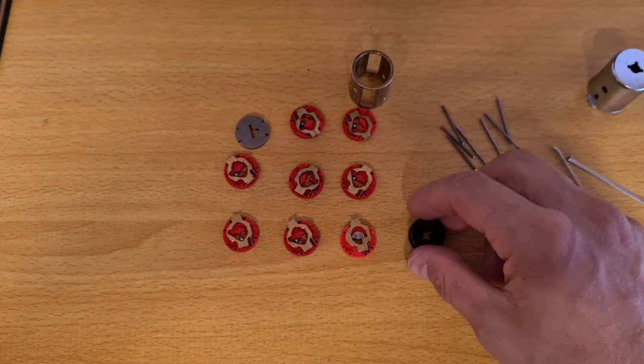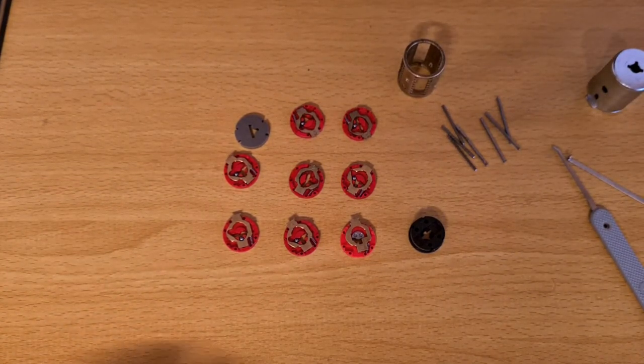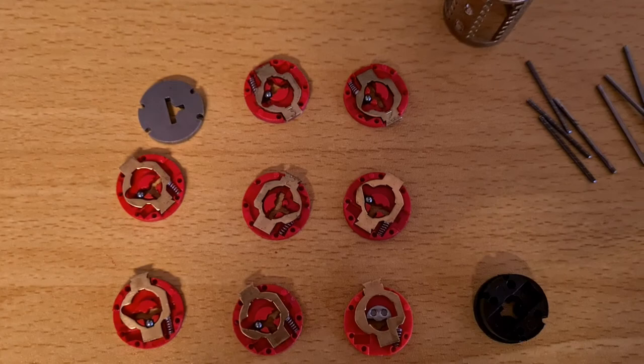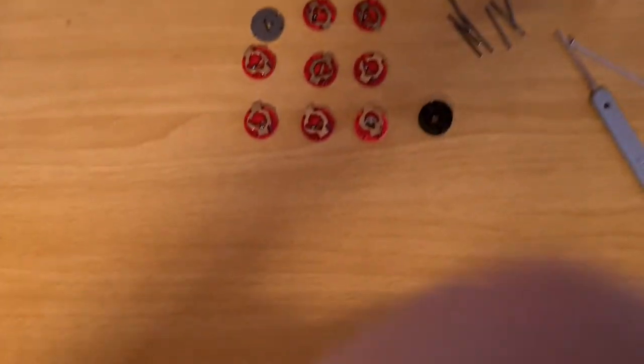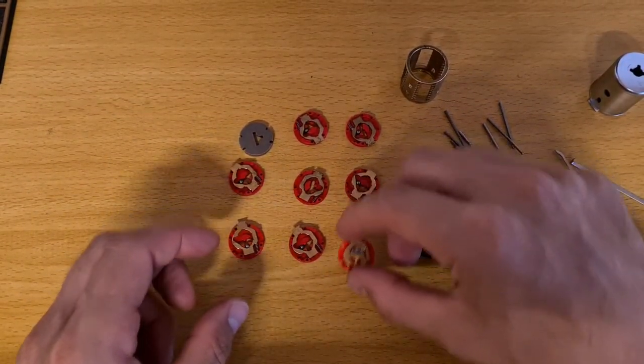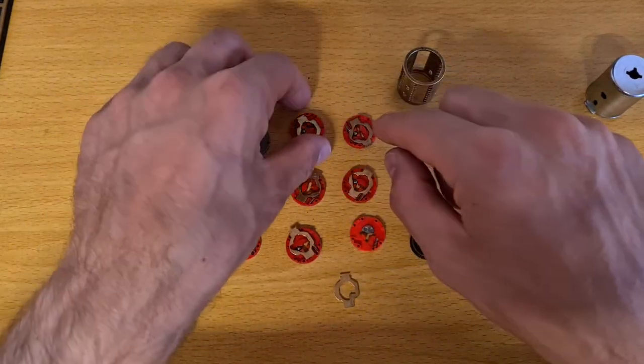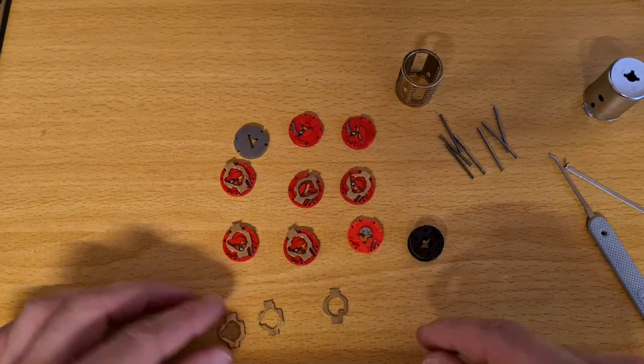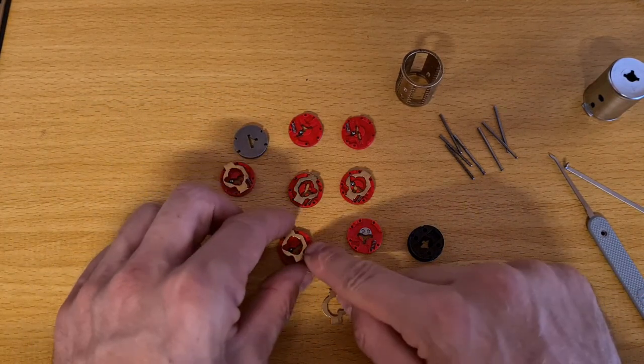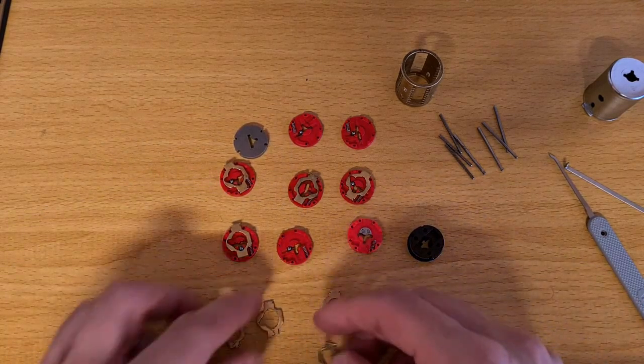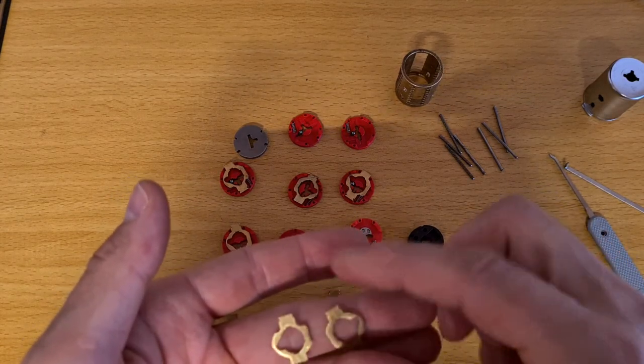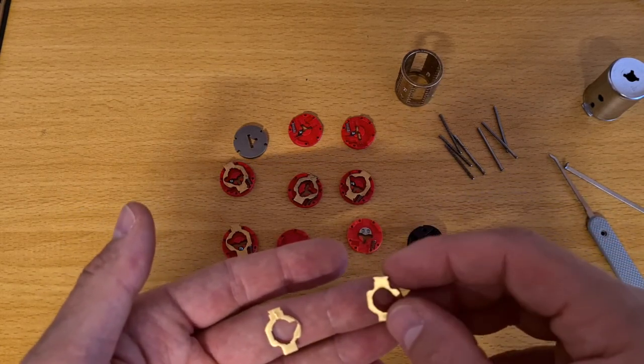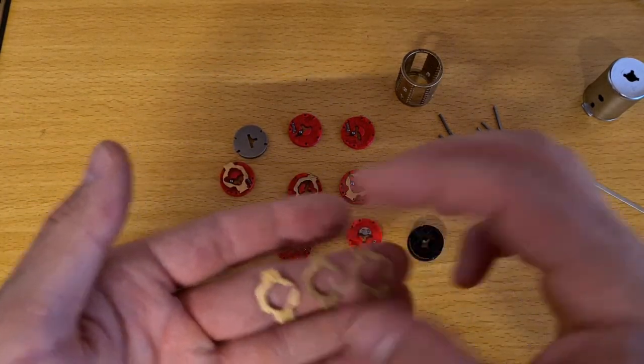Here it is completely gutted. You see pretty much everything that's in the lock. Let me show it closer. Here's everything. Now I would like to show the difference between different wafers. That's three, two, and let me find number one. Here it is.